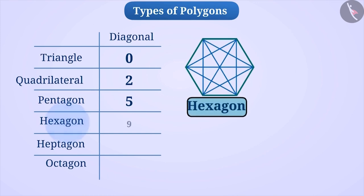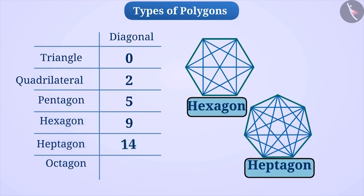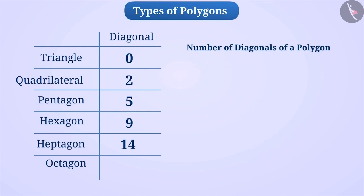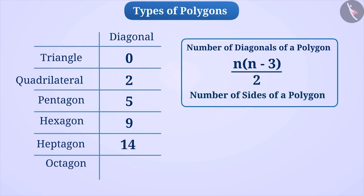Similarly, in a hexagon, nine diagonals can be drawn and in a heptagon, 14 diagonals can be drawn. To find the number of diagonals in a polygon, we use n multiplied by n minus 3 divided by 2 formula, where n is the number of sides of the polygon.